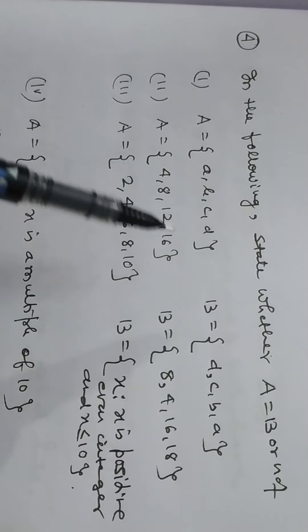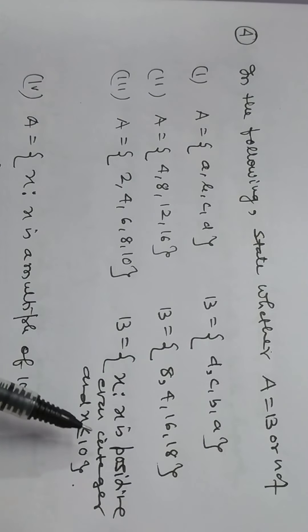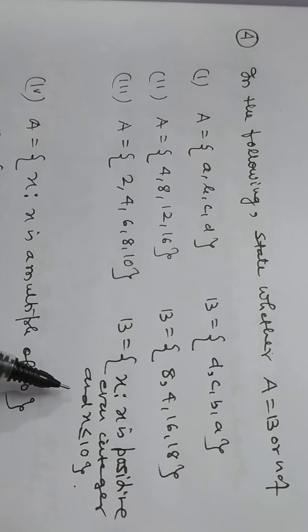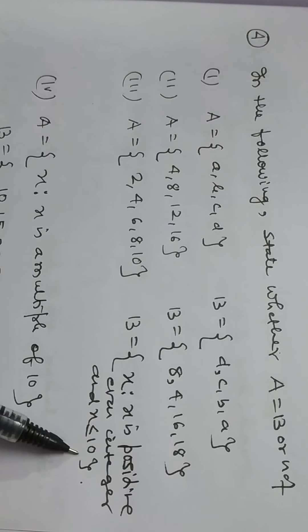A is equal to 2, 4, 6, 8, 10. B is x, x is a positive even integer and x less than equal to 10. Positive even integer.